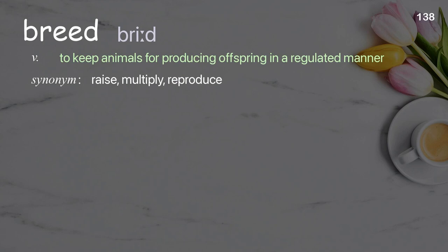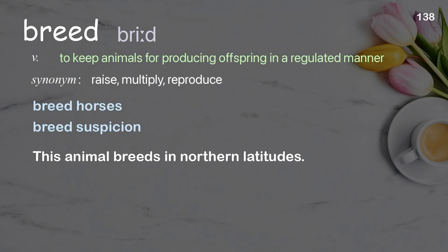Breed: to keep animals for producing offspring in a regulated manner. Examples: breed horses; breed suspicion; this animal breeds in northern latitudes.